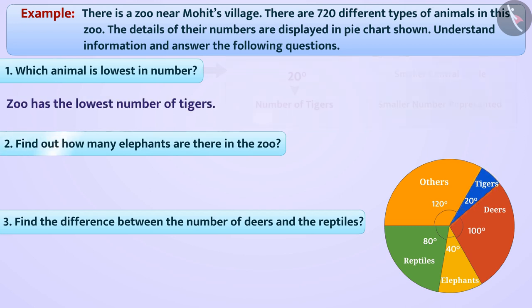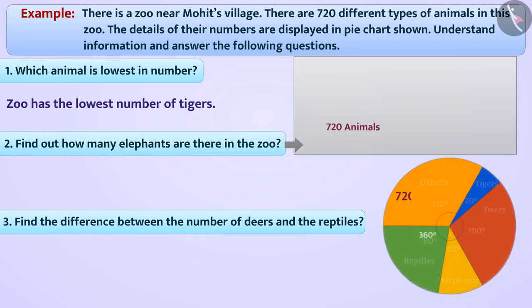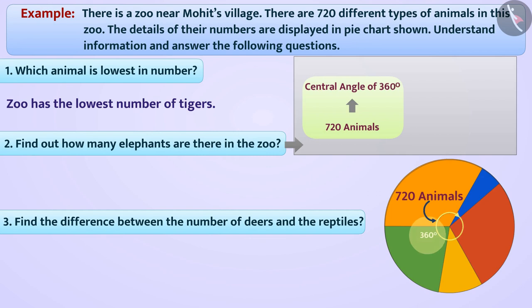Find out how many elephants are there in the zoo. A total of 720 animals are represented here from a central angle of 360 degrees.